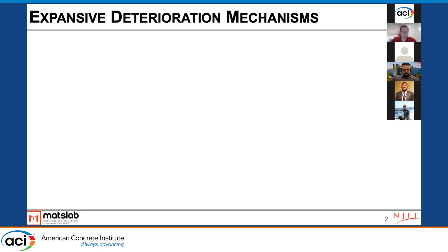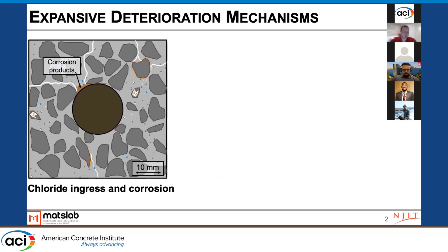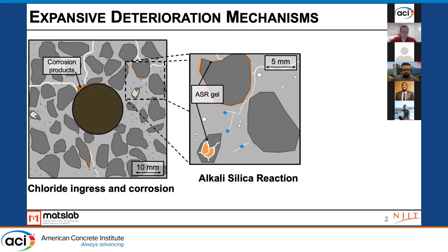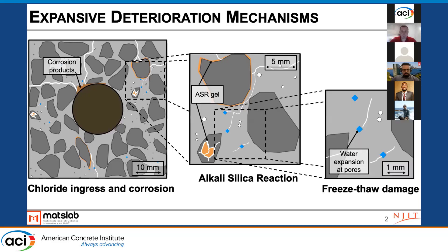The motivation behind this research program really deals with expansive deterioration mechanisms in reinforced concrete structures. If we take a representative slice through a deteriorating piece of concrete, there are multiple forms of deterioration that can occur at different length scales. At one of the larger length scales, we're familiar with corrosion. As you zoom in around aggregates, we can form ASR gel and develop alkali silica reaction. And then there's water expansion of pores that occurs due to freeze-thaw damage. All of these result in some sort of expansive stresses and deformations that cause cracking and deterioration.